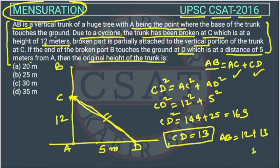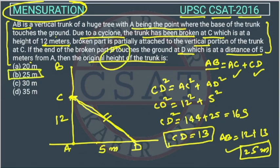So AB = AC + CD = 12 + 13 = 25 meters. The original height of the trunk is 25 meters. The answer is option B.